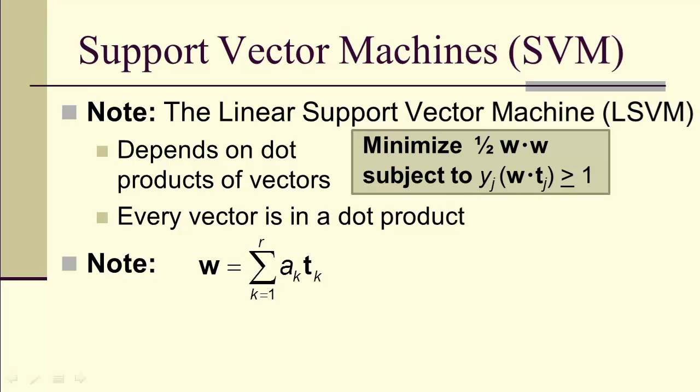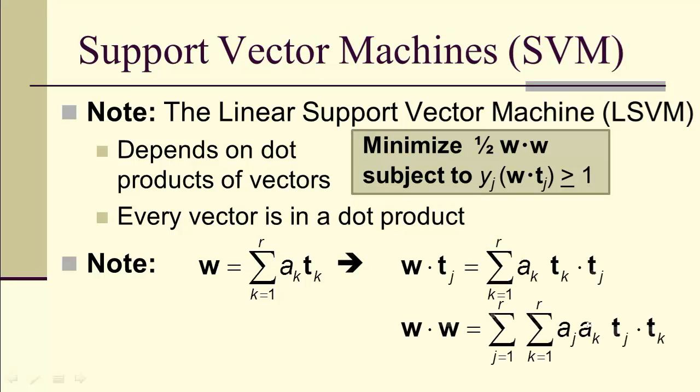If we've got w equals sum k equals 1 to r of a_k t_k, the linear combination of the t_k's, it's the same thing. The only time we see a vector is when it's inside of an inner product. And w dot w is a product of the linear, or the scalar, coefficients a_j, a_k, times a dot product.